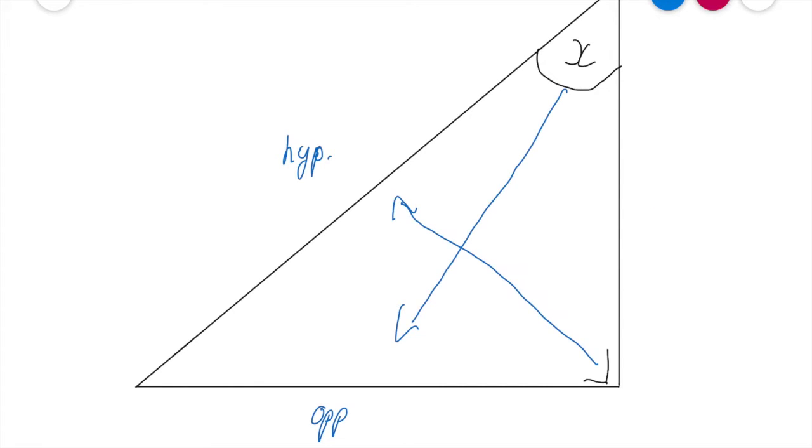So over here is going to be my adjacent side. Now last but not least let's really throw a curve ball in. Let's say I'm asked to find the angle B which is down in this corner here.